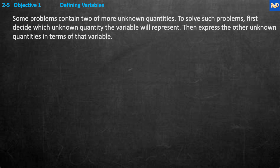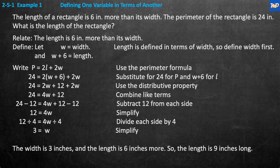Example 1: defining one variable in terms of another. The length of a rectangle is 6 inches more than its width. The perimeter of the rectangle is 24 inches. What is the length of the rectangle? Let's define the width as w. And the length is w plus 6, because the length is 6 inches more than the width.